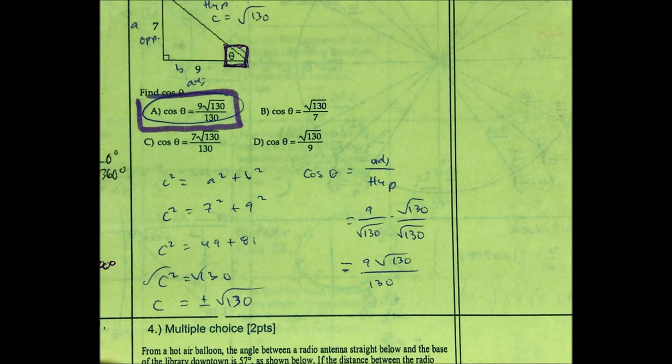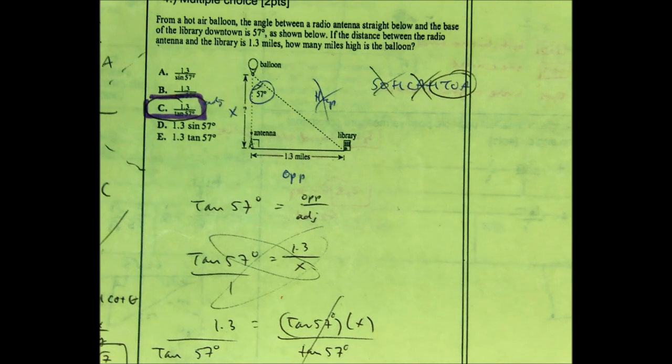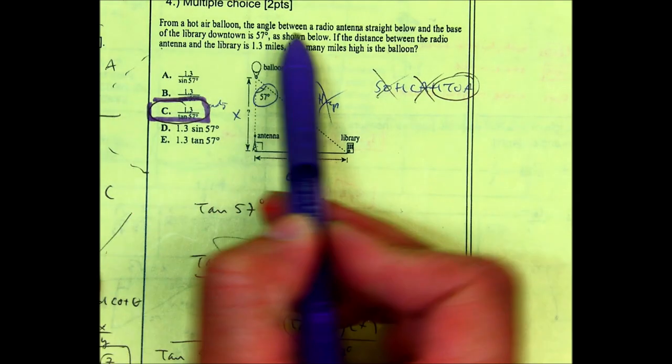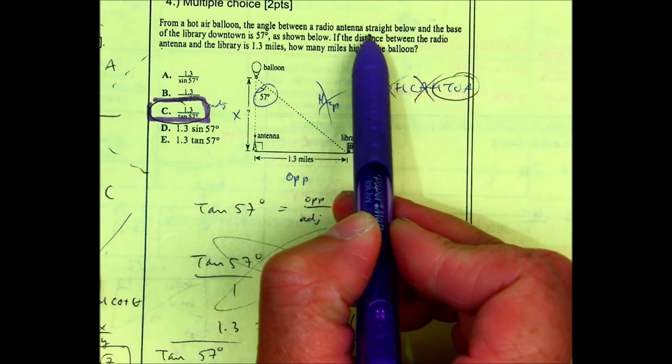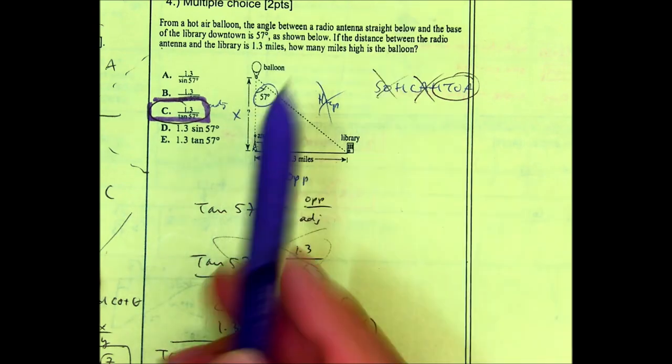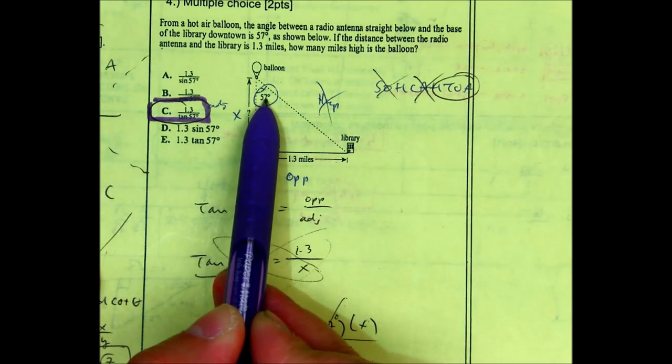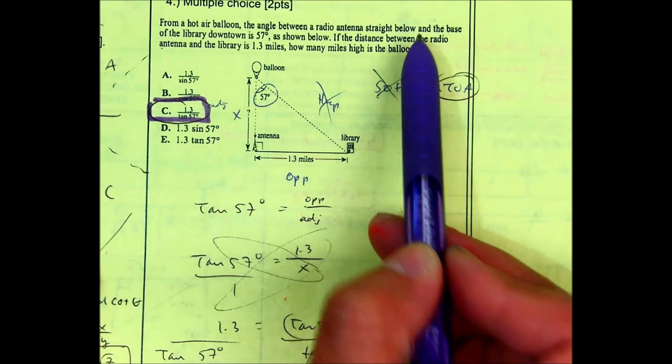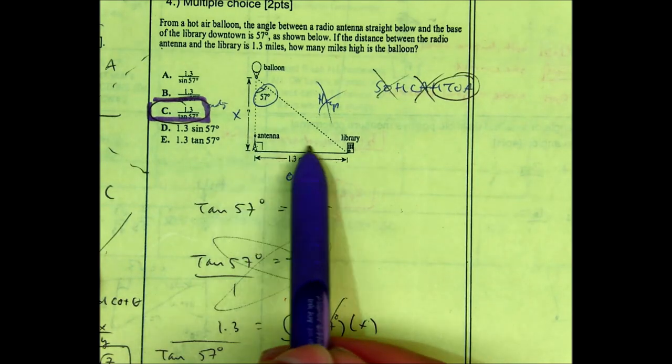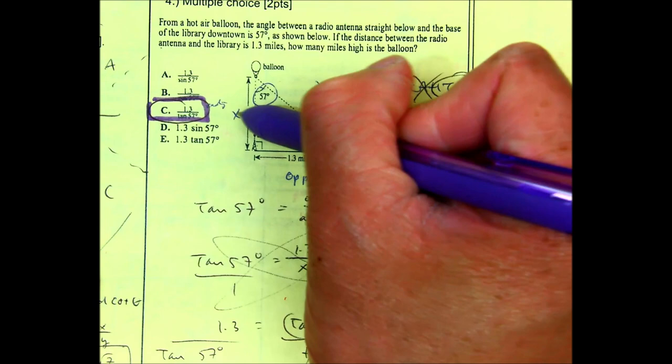That one is two points or nothing. Question number 4. From a hot air balloon, the angle between a radio antenna straight below and the base of the library downtown is 57 degrees. As shown below. If the distance between the radio antenna and the library is 1.3 miles, how high is the balloon? It has a question mark there. I put an X.